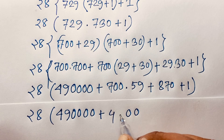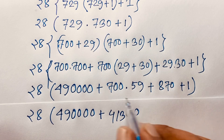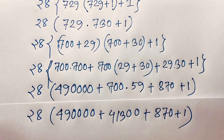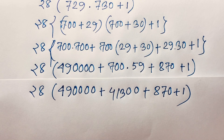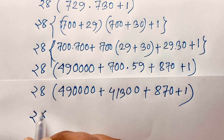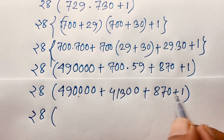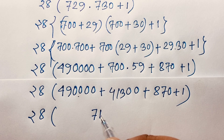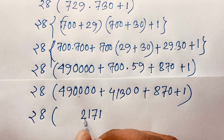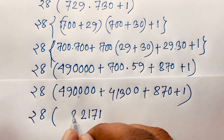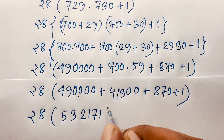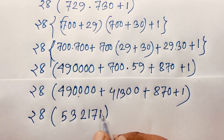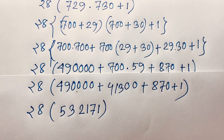Adding the values we find 532171. Now this expression is 28 times 532171, and we need to compute this product. Adding step by step we find our result: 532171.